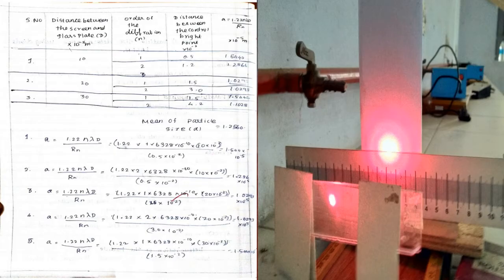Now, at the grating distance of 10 centimeters, having two circular diffractions, the first circular diffraction radius is 0.5. This value is substituted into the particle size formula: a equals 1.22 n λ D divided by R_n. Here λ is a constant wavelength 6328 Angstrom. The remaining R_n value and D value are substituted, and here n equals first diffraction, so n equals 1.